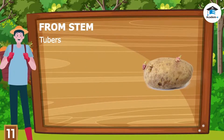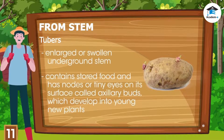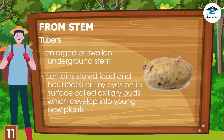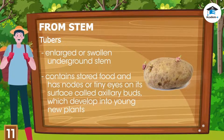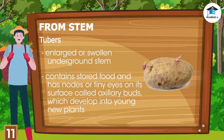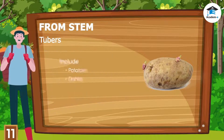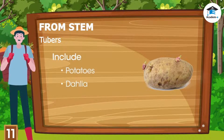Tubers are enlarged or swollen underground stems that contain stored food and have nodes or tiny eyes on their surface called axillary buds, which develop into young new plants. Potatoes and dahlia are examples of tubers.